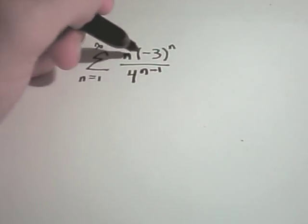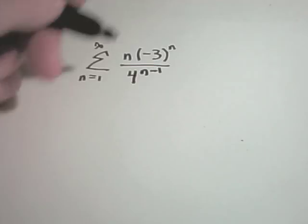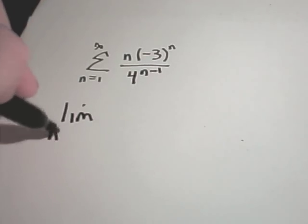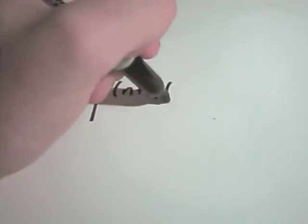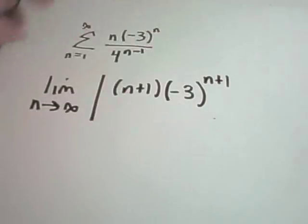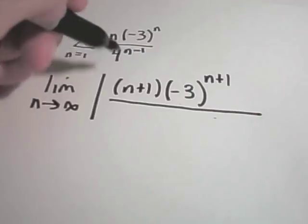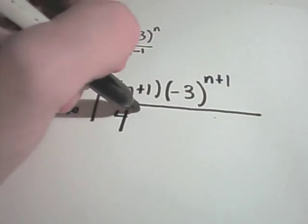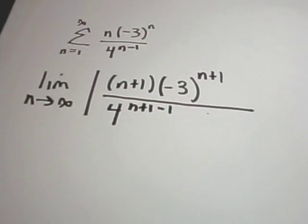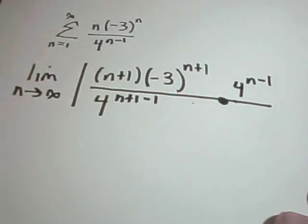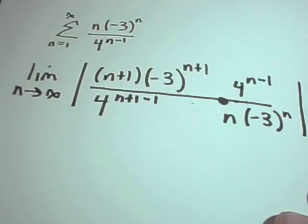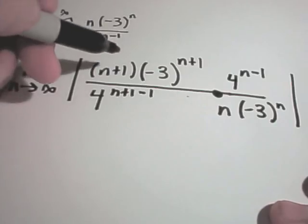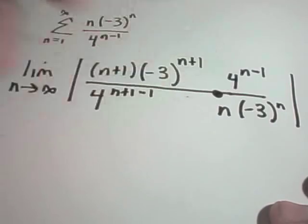Here I've got the series n times negative 3 raised to the n, over 4 to the n minus 1. I'm going to do the limit as n goes to infinity. Everywhere there's an n, I'm going to replace it with n plus 1. So I'll have n plus 1 times negative 3 raised to the n plus 1 power, over 4 raised to the n plus 1 minus 1 power. Then I need to multiply by the flip of the original: 4 raised to the n minus 1 on top, and n times negative 3 to the n on the bottom.